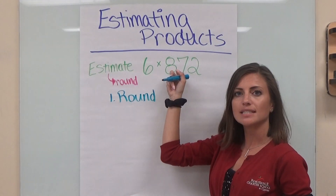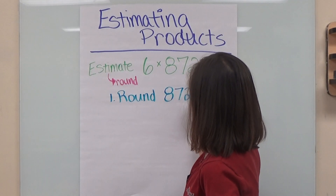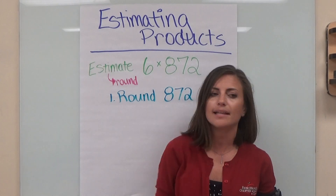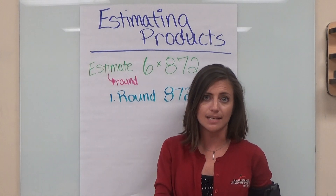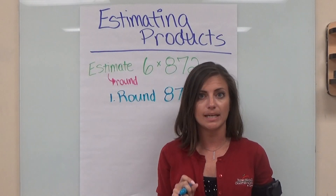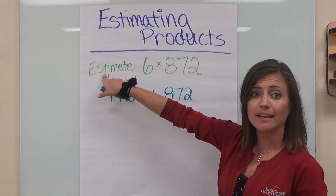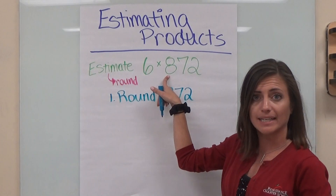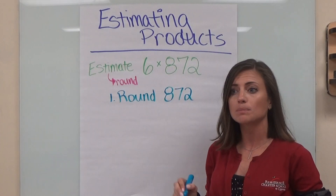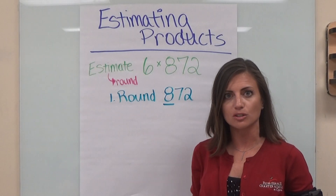So we round 872. Now you might be asking, but wait, what place value do we round it to? They didn't tell us. And you are right — they normally will say round to the tens, round to the hundreds, round to the thousands. When you are rounding to estimate, you always round to the biggest place value. Let me say that one more time: when we are rounding to estimate, we always round to the biggest place value. So in this situation, since eight is in the hundreds place, the hundreds is our biggest place value, and that's the number we are going to be rounding to.